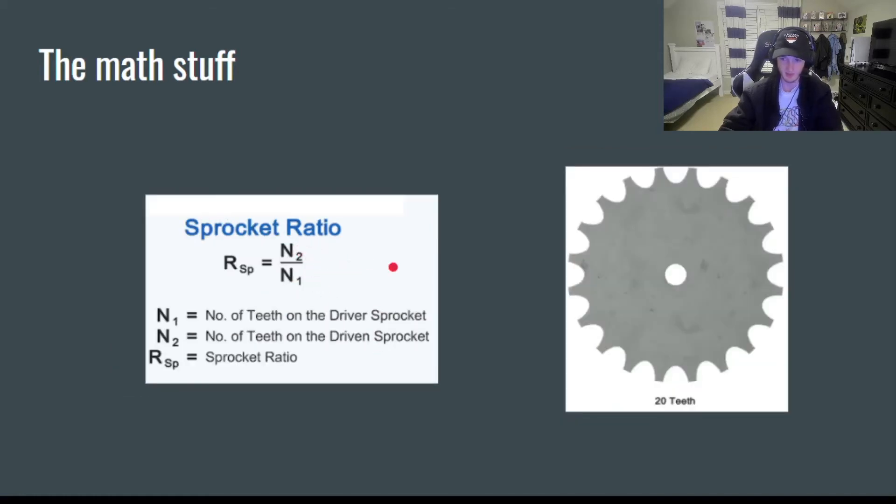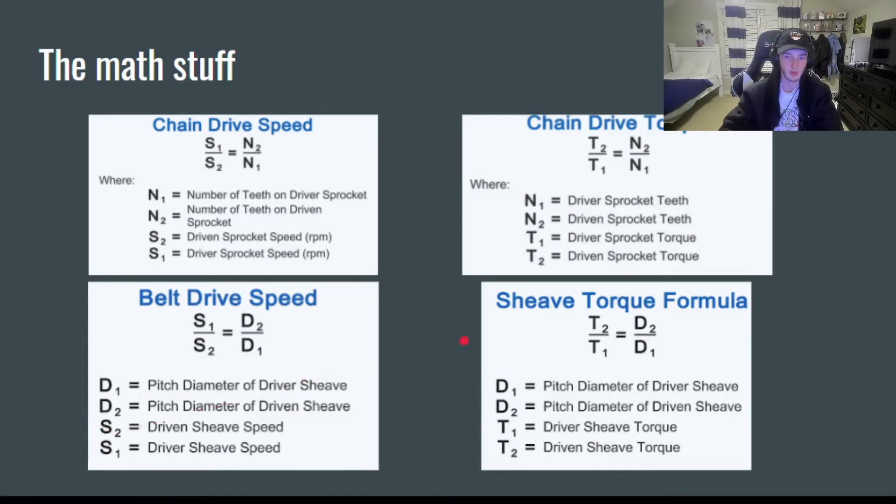It's the same thing for chains, basically, except instead of pitch diameter you got to work with teeth. So let's say your driver sprocket has 20 teeth. That number would go on the bottom here. And if your driven one had, I don't know, 10 teeth, that would go on the top. 10 over 20 is one half, so your sprocket ratio would come out to one half.